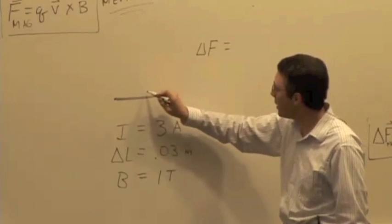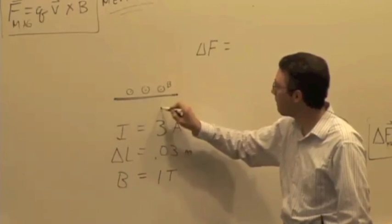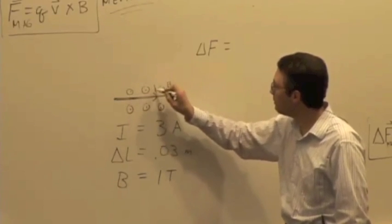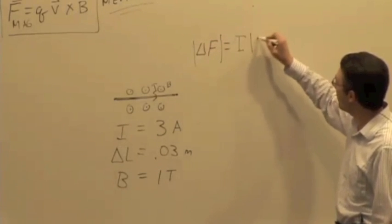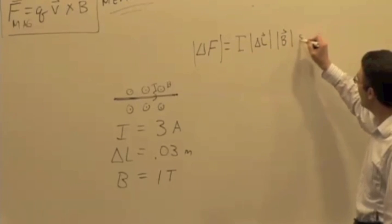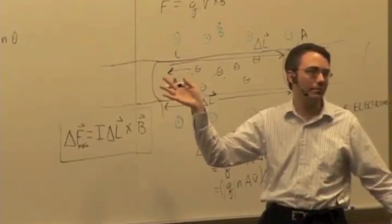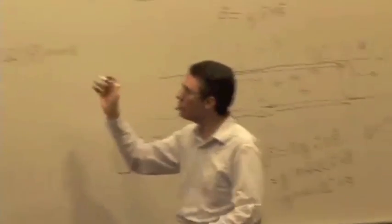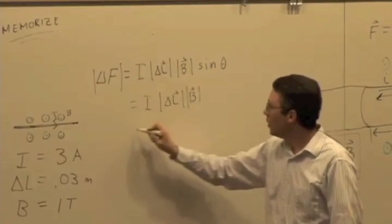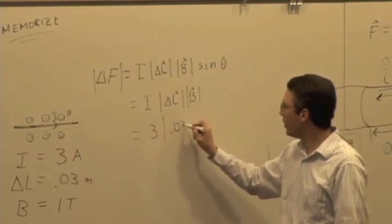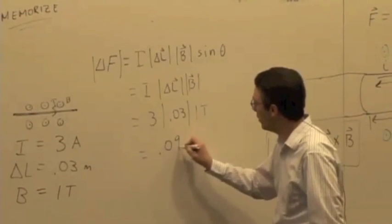So we end up with a force that's equal to, or a force on this segment. Let's say the magnetic field, again, is pointing in some direction. And the current's going that way. So the force would be, the magnitude of the force would be the magnitude of the current times the magnitude of delta L times the magnitude of B times the sine of the angle between the current and the magnetic field, which in this case is what? The angle is what? 90 degrees, sine of 90 is 1. So I times delta L times B. We have three amps times 0.03 times one Tesla gives us 0.09 Newtons.